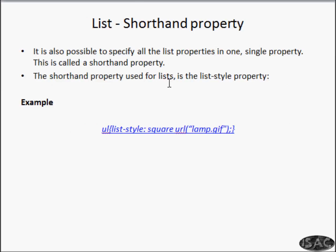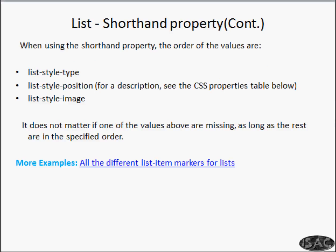As the shorthand: instead of writing list-style-type or list-style-image separately, you can just write list-style and pass the square and the URL together. If the image doesn't load, the square will appear. It is possible to specify all list properties in one single shorthand property called list-style. So we understood list-style-type, list-style-image, and list-style shorthand.